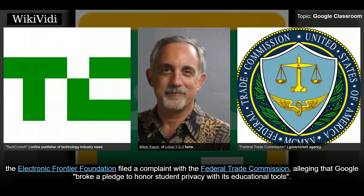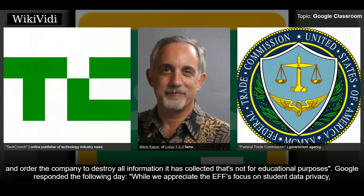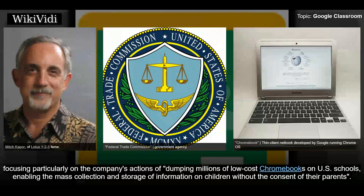On December 1st, 2015, the Electronic Frontier Foundation filed a complaint with the Federal Trade Commission alleging that Google broke a pledge to honor student privacy with its educational tools. EFF staff attorney Sophia Cope stated they were calling on the FTC to investigate Google's conduct, stop the company from using student personal information for its own purposes, and order the company to destroy all information collected not for educational purposes. Google responded that its tools comply with both the law and the student privacy pledge. In April 2017, the EFF made new allegations focusing on Google dumping millions of low-cost Chromebooks on U.S. schools, enabling mass collection and storage of information on children without parental consent.